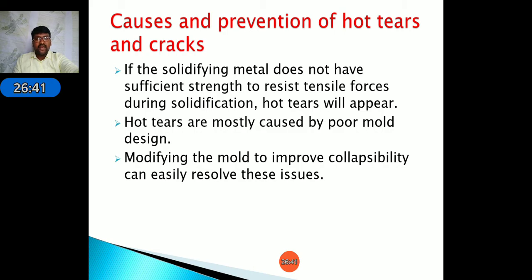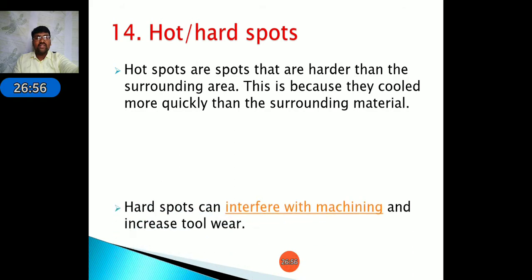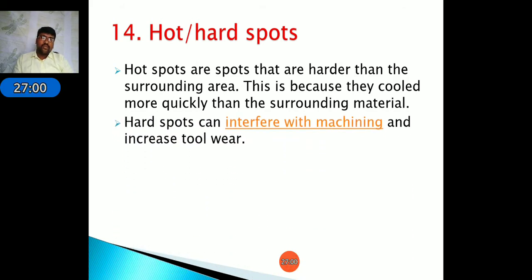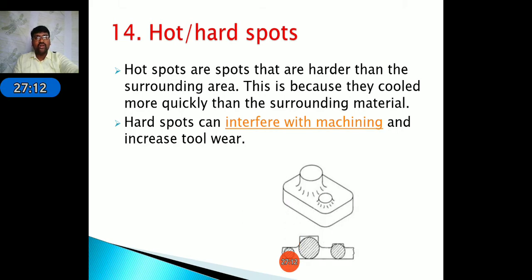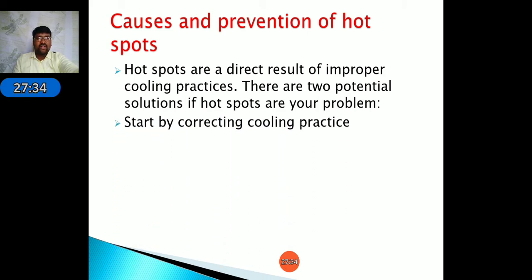Modifying the mold to improve collapsibility can resolve hot tear issues. Hot spots are areas harder than the surrounding material because they cool more quickly than surrounding materials. At the point of pouring, the material has higher strength compared to surrounding material, creating hot spots. Hot spots can interfere with machining. Hot spots are a direct result of improper cooling practices; solutions include correcting cooling practice and changing the metal chemical composition.